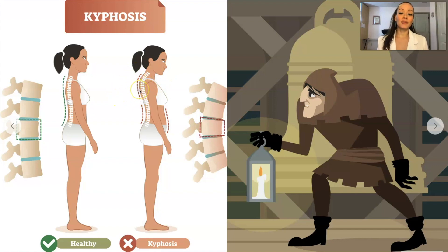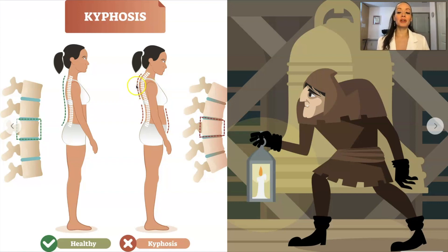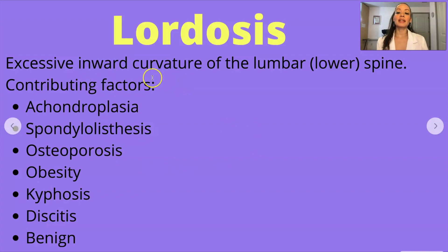Sometimes I see kyphosis in young adults simply because of bad posture. We sit at a computer all day and we tend to slouch, and with time we adopt that posture permanently. So you want to be very careful and sit properly so that you don't develop kyphosis.